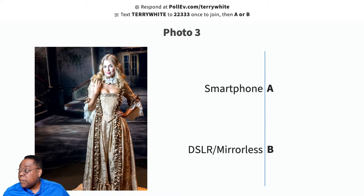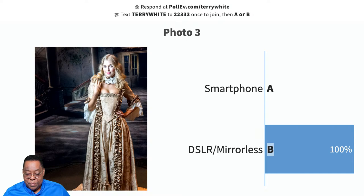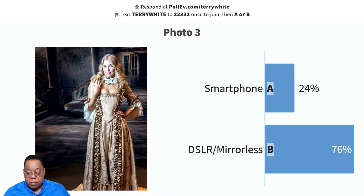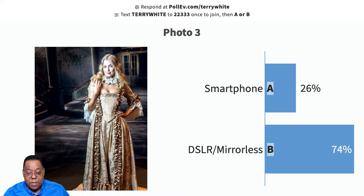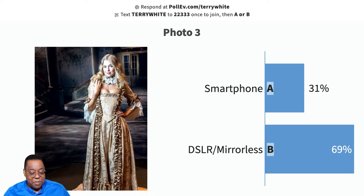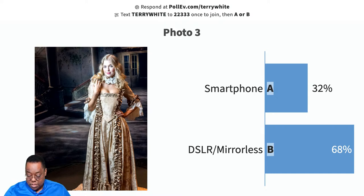Photo number three — a portrait. I always had both cameras with me. To vote, head to pollev.com slash Terry White and you'll see each image as I bring it up. Locking this one in at 32% smartphone versus 68% DSLR.